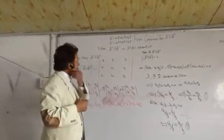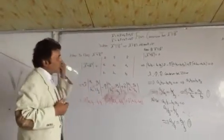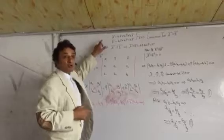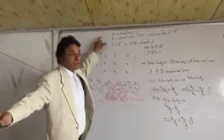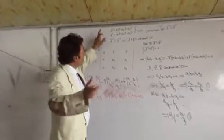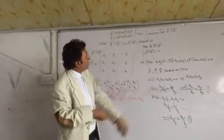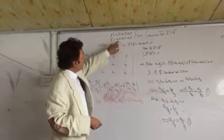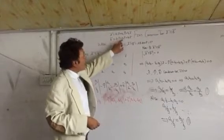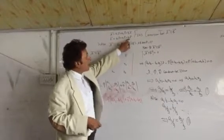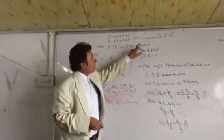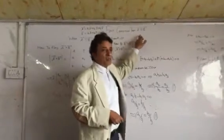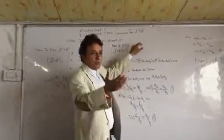I am going to tell you that if there are two vectors: a1 i cap, a2 j cap, a3 k cap, and the other is b1 i cap, b2 j cap, and b3 k cap — find the condition that A is parallel to B.